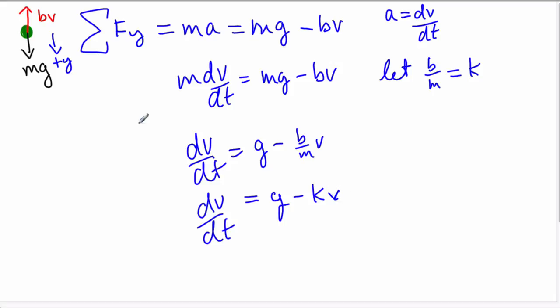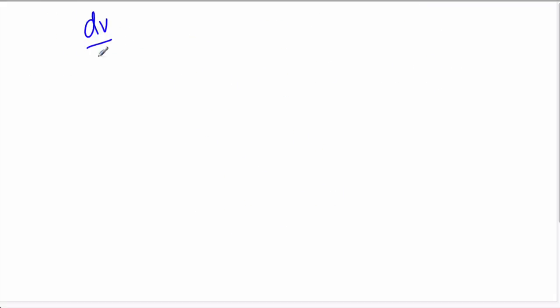Let's take that dv/dt equals g minus kv and separate our variables. First thing we're going to do is divide both sides by this guy. So now we get the expression 1 over g minus kv times dv/dt. Now it equals 1. We divided both sides by this.